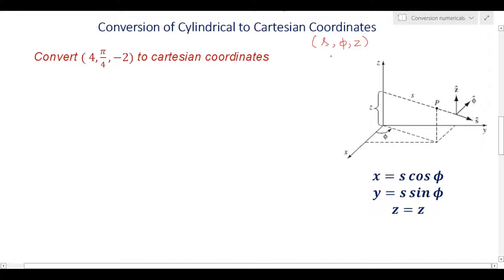The link will be provided in the description box. If you have not seen it or revised it, then watch that video and revise the concept. Here also we will quickly revise the concept: what is s, what is phi, and what is z. S is a point from the z-axis to the reference point p. S is the distance from the z-axis to the point p. In Cartesian coordinates, the position vector is the distance from the origin, but in cylindrical coordinates this distance is from the z-axis.